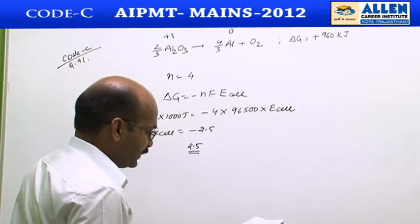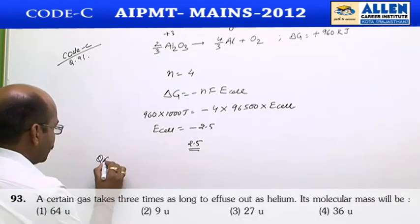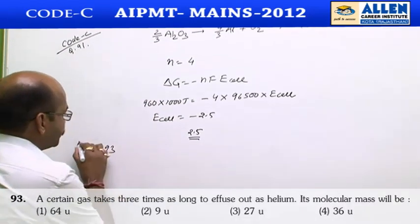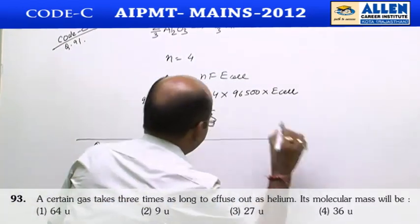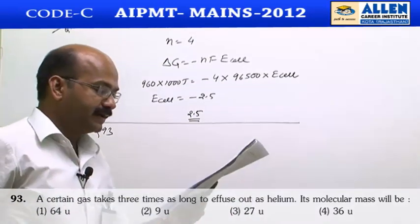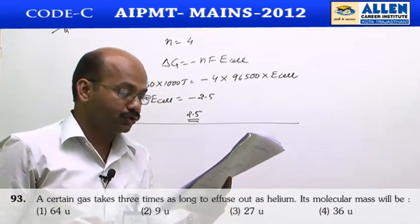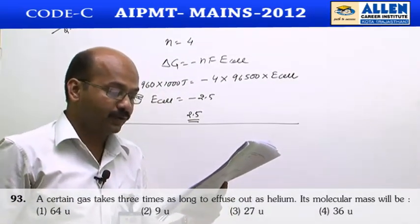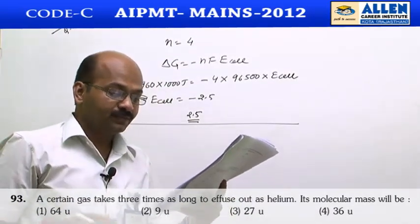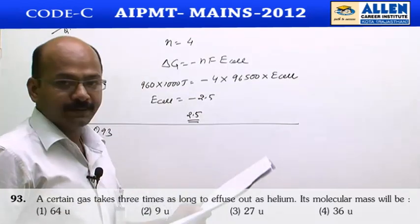Now question number 93 says: a certain gas takes 3 minutes as long to diffuse out as helium — find its molecular weight.